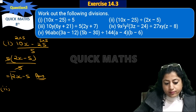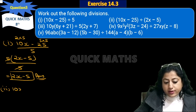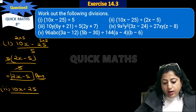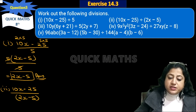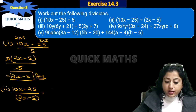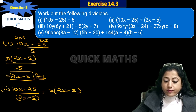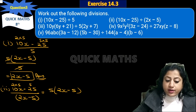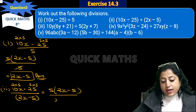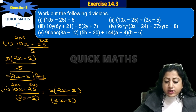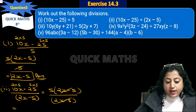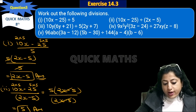Now the second part: (10x - 25) divided by (2x - 5). Similarly, we take common from the top. From the numerator, 5 is common, giving us 5(2x - 5). Now (2x - 5) in the numerator and denominator cancel — just like the monomial cancelled before, the binomial cancels the same way. So the answer is 5.